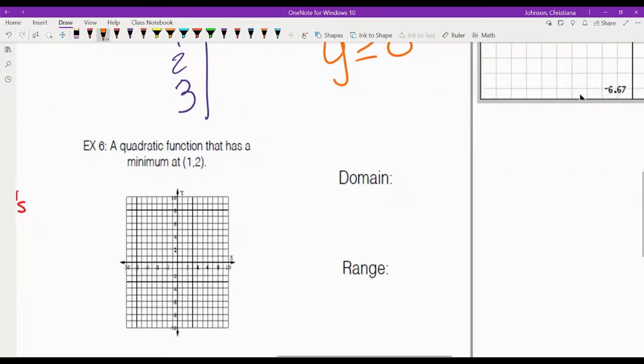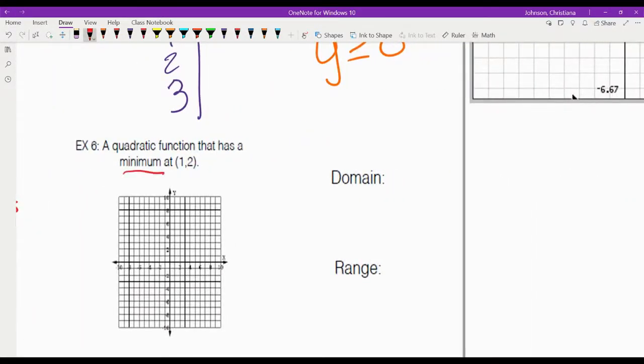Our last one is talking about the minimum, and the minimum is at positive 2. So at 1, positive 2, you have a minimum, which means the graph is going above that. And that will tell us, again, all real numbers for domain. And that tells us that our range starts at negative 2 and goes above it. So we have y is greater than or equal to 2.